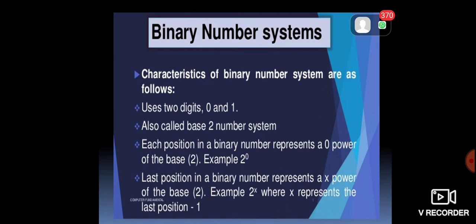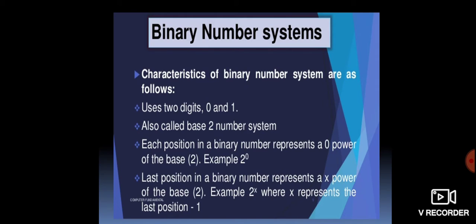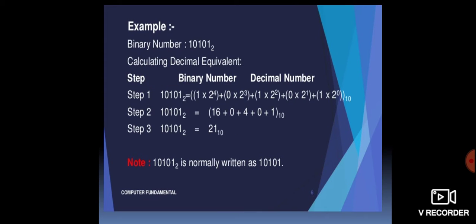For example, suppose you have 5 binary digits, so the last digit position goes from 0 to 4. So 2 raised to the power x would be 2 raised to the power 4, where x represents the last position minus 1. Since we start from 0, the highest power for 5 digits is 2 raised to the power 4.